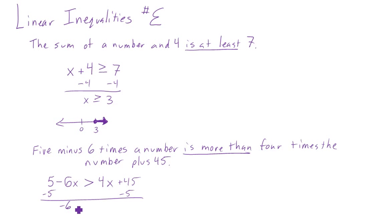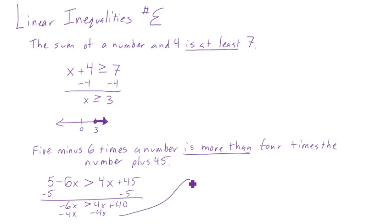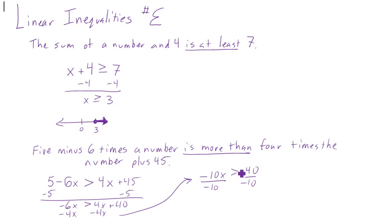So I have negative 6x is greater than 4x plus 40. I subtract the 4x and move it up: negative 6x minus 4x is negative 10x, which is greater than 40. The sign stays the same because I haven't multiplied or divided by a negative yet — but I'm about to. Dividing by negative 10: remember, when you divide by a negative, the inequality flips. So 40 divided by negative 10 is negative four. That's the answer — make sure to put it on a number line and you're done.